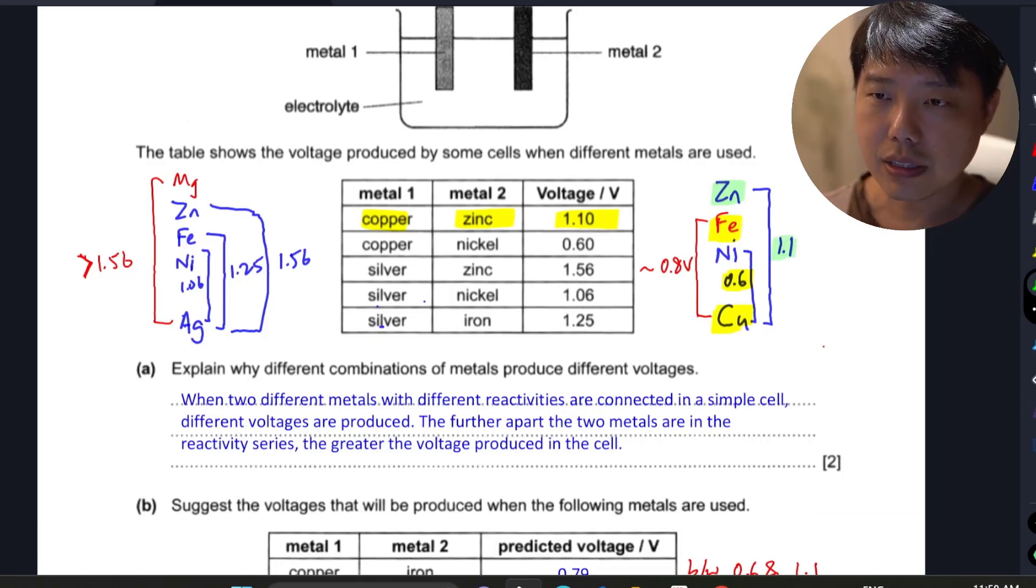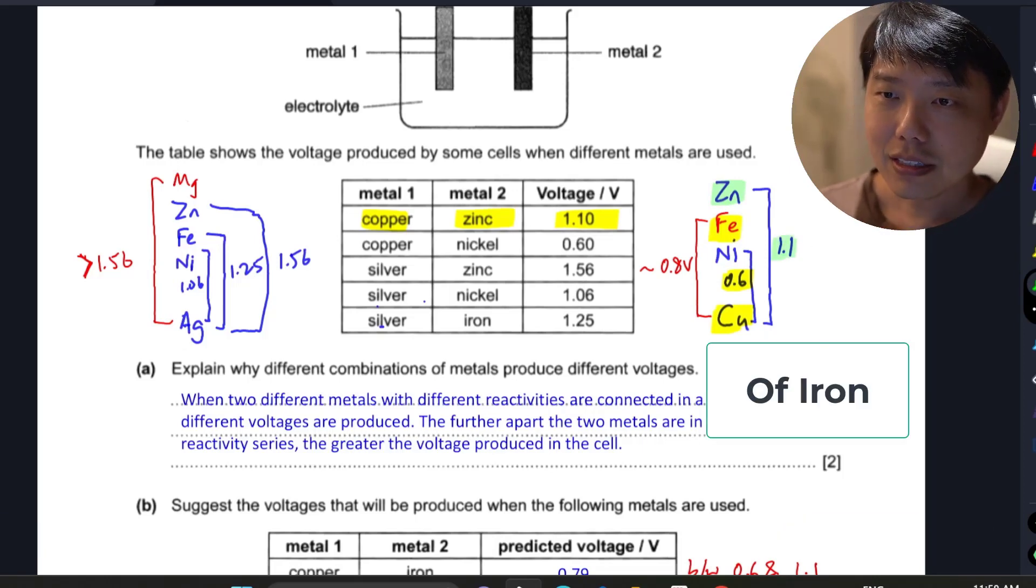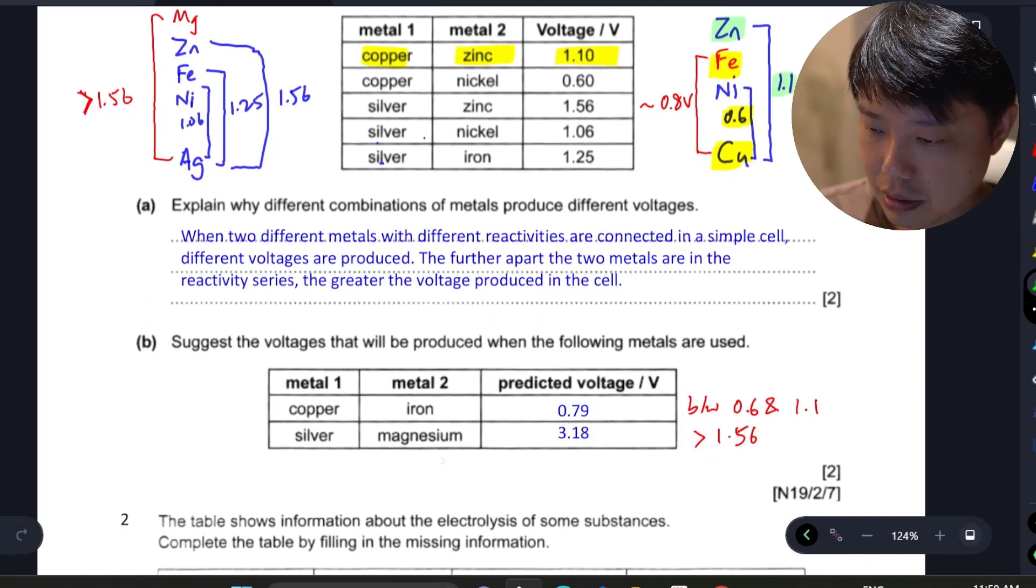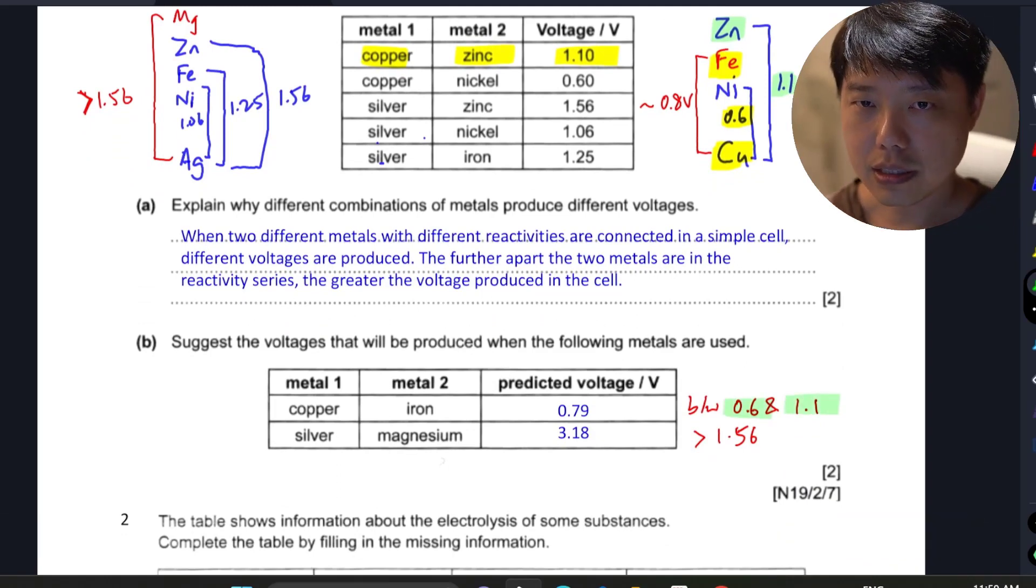Iron's reactivity lies between zinc and nickel, so the suggested voltage should be around 0.8 volts. You can put other values like 0.79, 0.69, or 0.85 - all will be marked correct. As long as your answer lies between 0.6 and 1.1 volts, it's all good.